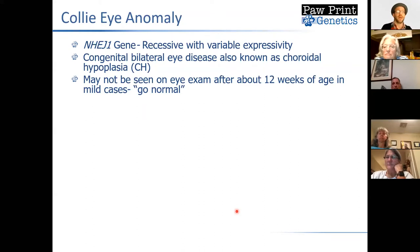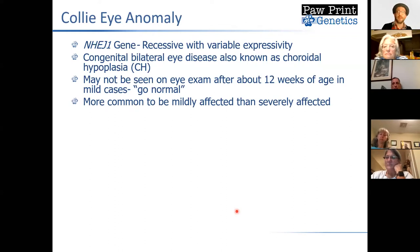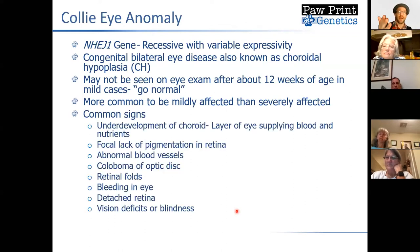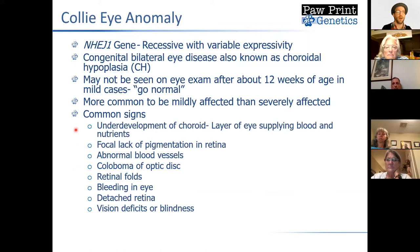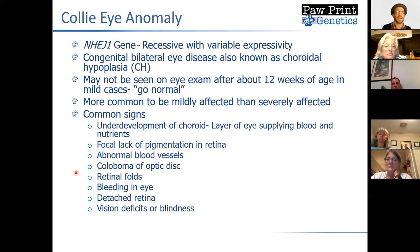What happens is pigment gets laid down in the retina around 12 weeks, and that pigment masks some of the changes that can be seen on an eye exam. It is more common to be mildly affected than severely affected, but dogs can have a wide variety of clinical signs ranging from underdevelopment of the choroid all the way up to detached retinas and bleeding into the eye — and in some cases, vision deficits or blindness. Luckily the vast majority of cases tend to be relatively mild, but this is something best avoided through selective breeding if at all possible.